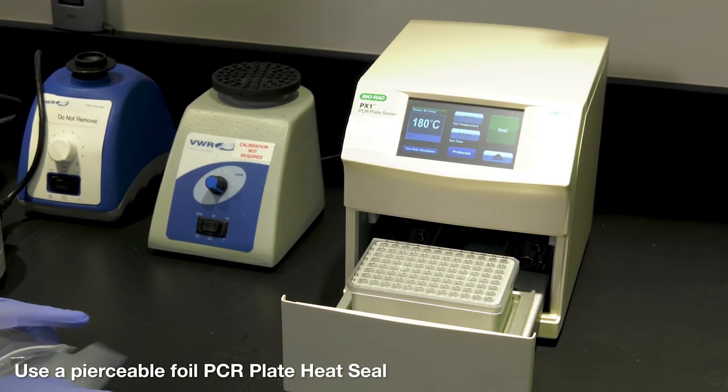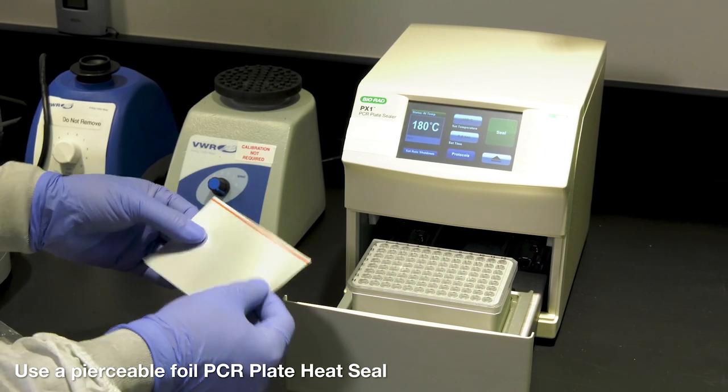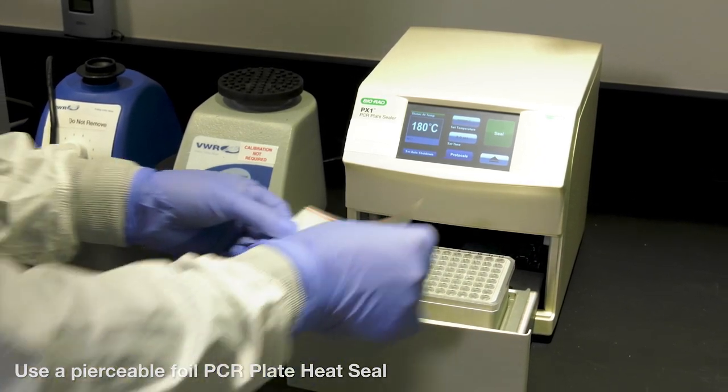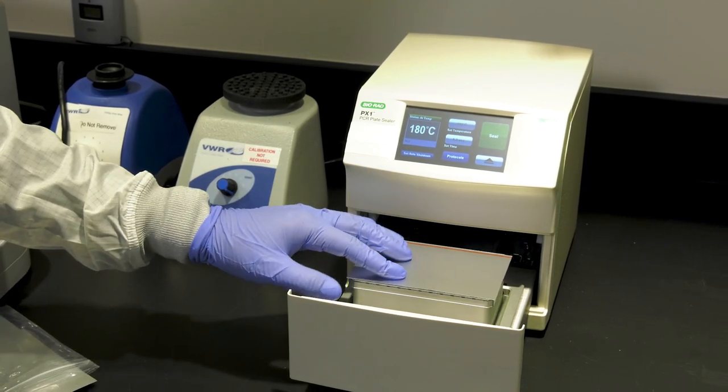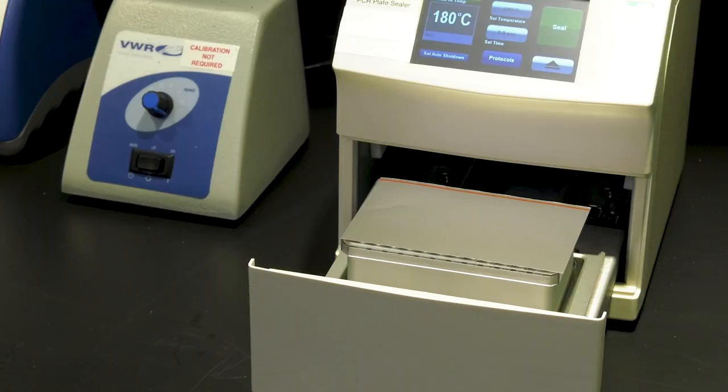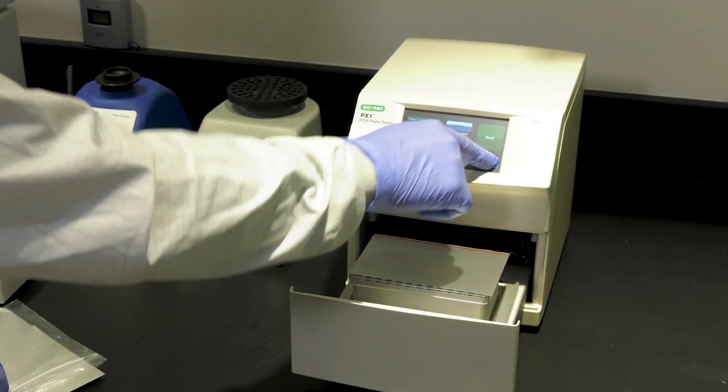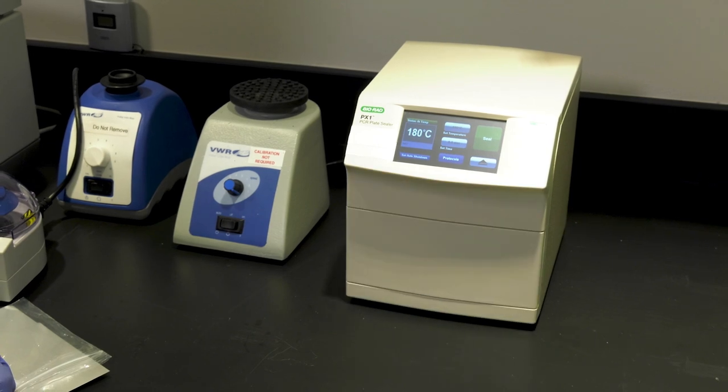Take a single, pierceable foil PCR plate heat seal, making sure you have just one seal. Place it on the DD-PCR plate with the red stripe at the top facing up. Make sure the seal is nice and square and seated well on the plate. Close the PX1 and press the seal button one time.